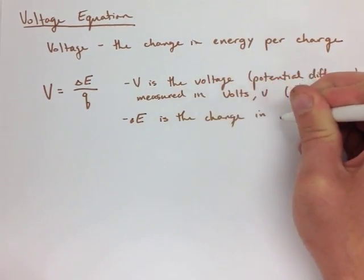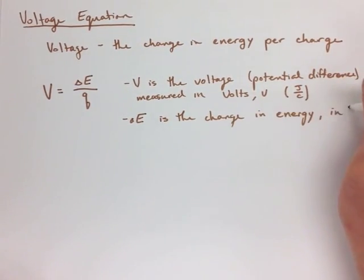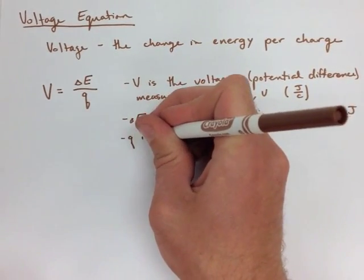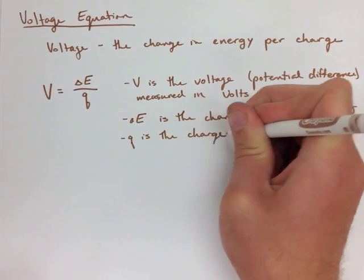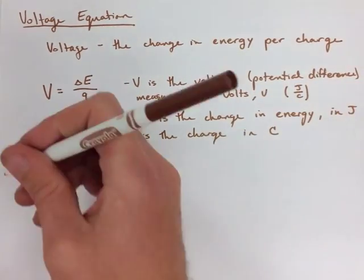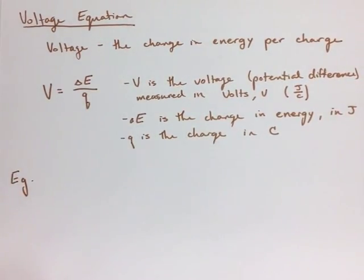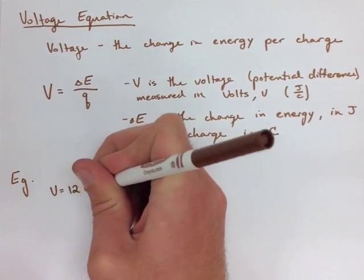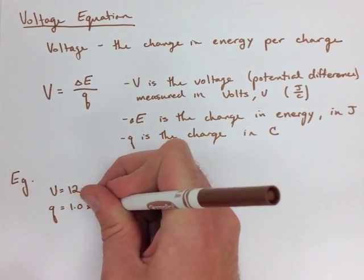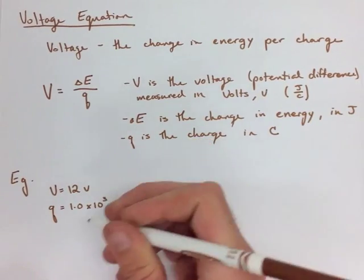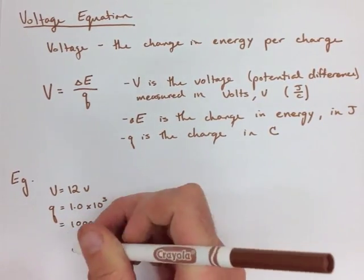But, we're going to just look at the first example, where we have a 12-volt car battery supplying 1,000 coulombs of charge to start a car, and we're looking for how much energy is used. So, we know we have 12 volts. We know we have a charge of 1,000 coulombs, and we need to find our energy.